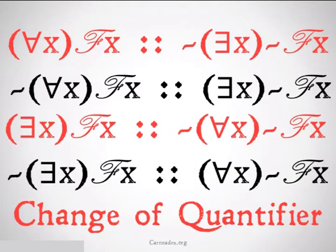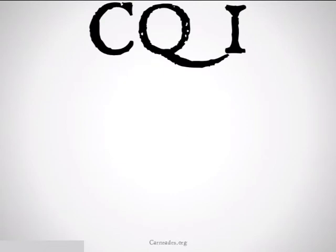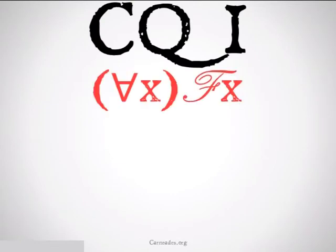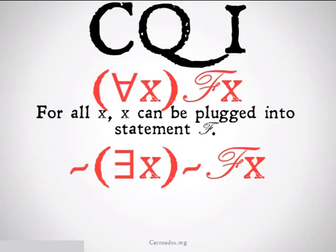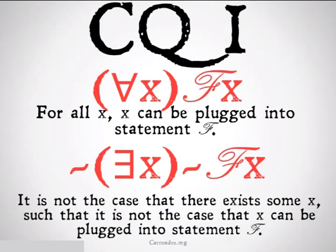We'll go through each one of these to give you a sense and an intuition of why they are all the case. Change of quantifier version 1: for all x, x is F. Therefore, it's not the case that there exists an x such that it's not the case that x is F.